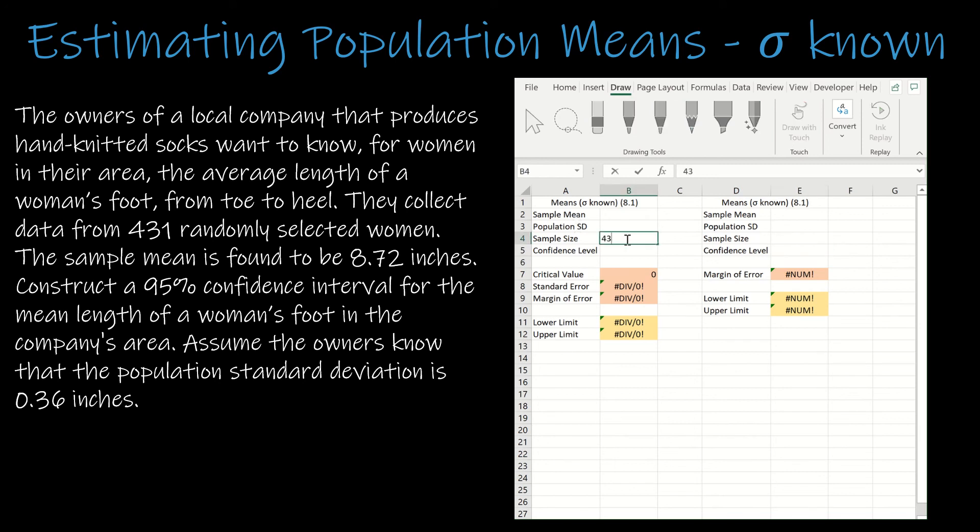We are looking at a sample mean of 8.72 inches. And we're looking at a 95% confidence interval, so 0.95. And assume the owners know that the population standard deviation is 0.36 inches.